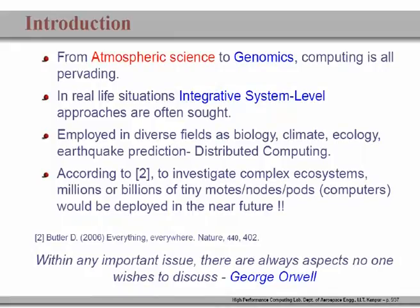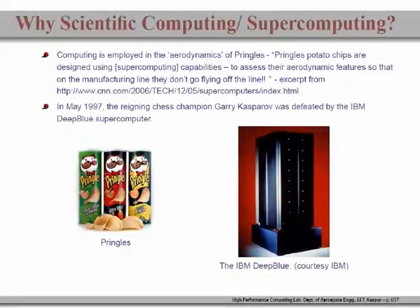One prediction is that by year 2020, we should be looking at complex ecosystems with millions or even billions of computers — called tiny nodes or pods — deployed to track complex systems. Having said all this inspirational talk, what we are doing currently also leaves room to probe further. As Orwell said, within any important issue there are many more issues people are reluctant to talk about. We will discuss some of those and find out better ways of computing.